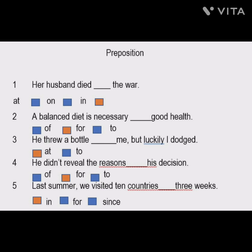The fifth sentence: 'Last summer we visited 10 countries ___ three weeks.' We have three options — in, for, and since. Let us try them: 'last summer we visited 10 countries in three weeks,' 'for three weeks,' or 'since three weeks.' You can mention your answer in the comment box. The correct answer is 'in': last summer we visited 10 countries in three weeks.